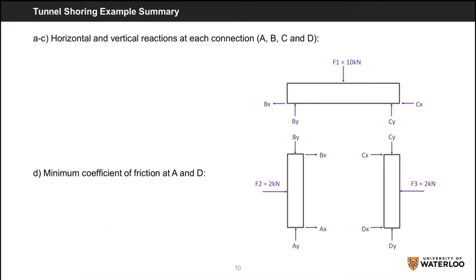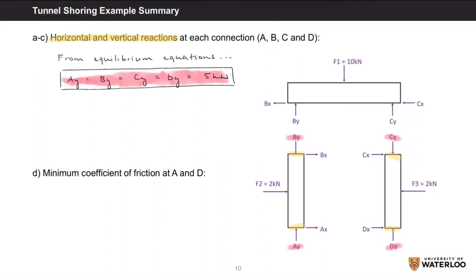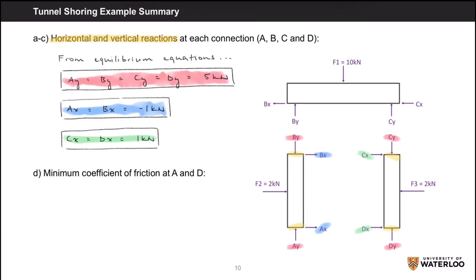To summarize: parts A through C solved for the horizontal and vertical reactions at each connection A, B, C, and D. Using equations of equilibrium, AY, BY, CY, and DY are all 5 kN. AX, BX, CX, and DX all share a magnitude of 1 kN, but AX and BX act to the left while CX and DX act to the right. In part D, the minimum coefficient of friction was found by analyzing one upright; by symmetry it is the same for both, giving μ = 0.2 at A and D.